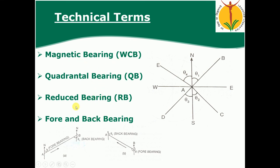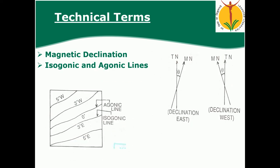The conversion of magnetic bearing into quadrantal bearing is called reduced bearing. The next important terms are fore bearing and back bearing. Any bearing measured in the direction of progress of the survey line is called the fore bearing — for example, measuring from station A to station B. The bearing measured opposite to the progress of the survey line is called the back bearing, i.e., from B to A.